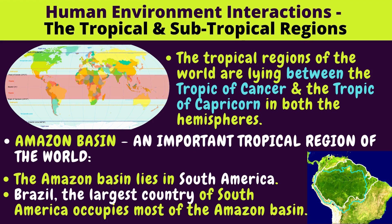Human Environment Interactions: The Tropical and Subtropical Regions. The tropical regions of the world lie between the Tropic of Cancer and the Tropic of Capricorn in both hemispheres. Looking at the map, all that pink area is the tropical region, lying between the Tropic of Cancer and the Tropic of Capricorn.